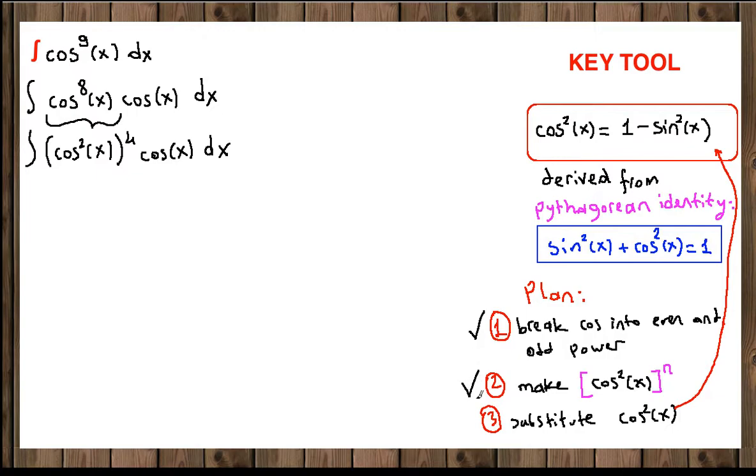We're done with step two. Now step three. We're going to substitute cosine squared of x with one minus sine squared of x. So one minus sine squared of x to the fourth power times cosine of x dx.